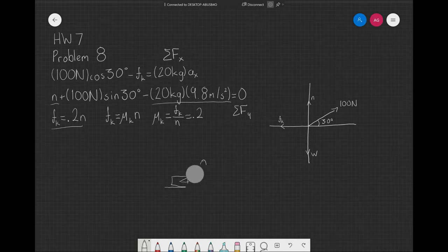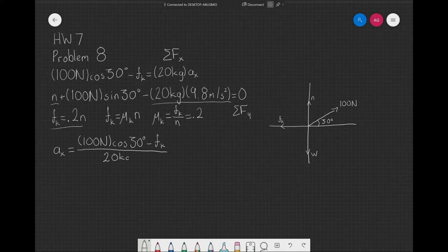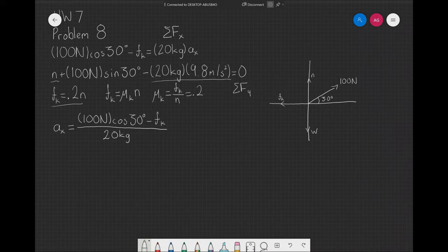We already have the free body diagram, and now we're asked for the acceleration. We can solve for that from the first equation as 100 newtons times the cosine of 30 degrees minus whatever friction force is, over 20 kilograms. Then, we're going to use this equation to solve for our friction force. So we end up with 30 minus 0.2 times the normal force.